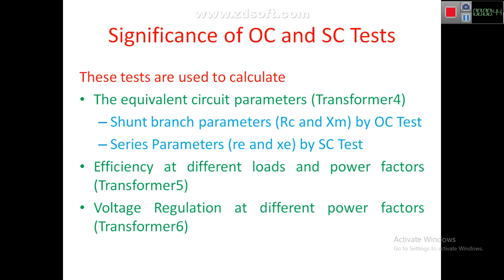These tests are used to calculate equivalent circuit parameters. We have already discussed the equivalent circuit of the transformer, where we have many parameters. The shunt branch parameters RC and XM can be calculated by using the OC test, and the series parameters RE and XE can be calculated by the short circuit test.